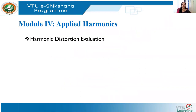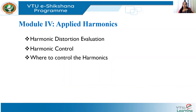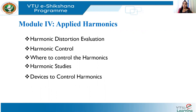In the last five lectures, we have seen topics such as harmonic distortion evaluation, harmonic control — whether it is on the utility side, distribution side, or customer side — and what is meant by harmonic studies, the necessary conditions and tools for harmonic studies. We also saw some devices used to control harmonics. Today, we are going to discuss further on devices used to control or mitigate harmonics, and we are going to see an example of a filter design.